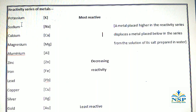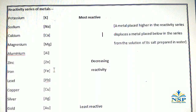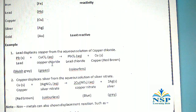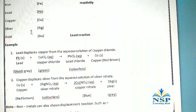When a more reactive metal reacts with the salt of a less reactive metal, it displaces the less reactive metal in a displacement reaction. For example, lead displaces copper from the aqueous solution of copper chloride: Pb + CuCl₂ → PbCl₂ + Cu. Lead displaces copper because lead is higher in the reactivity series than copper.